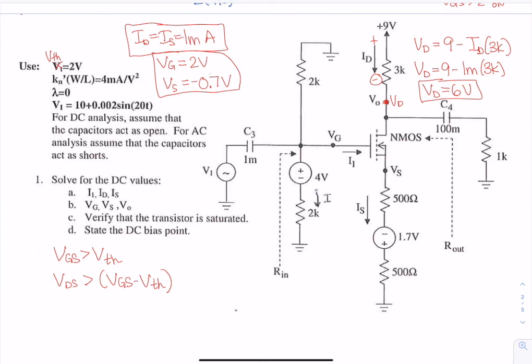In this case, VGS, we already checked, was 2.7 volts, and that is greater than the VTH of 2 volts. So it is on. VDS is going to be 6.7 volts, which is greater than 2.7 minus 2 for a value of 0.7 volts. So it is in saturation.